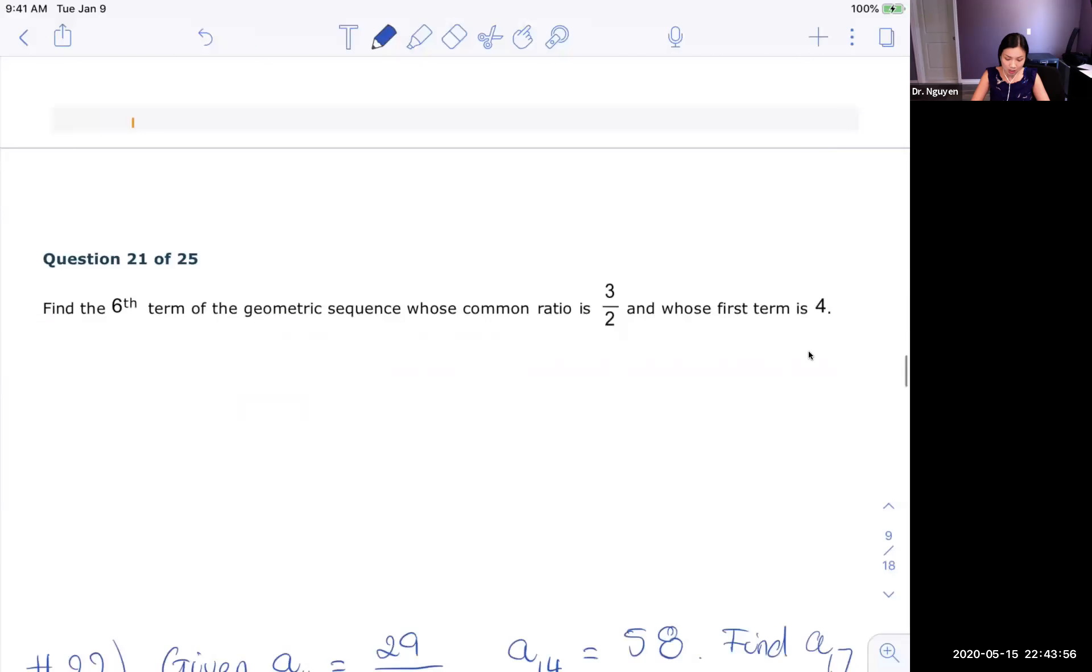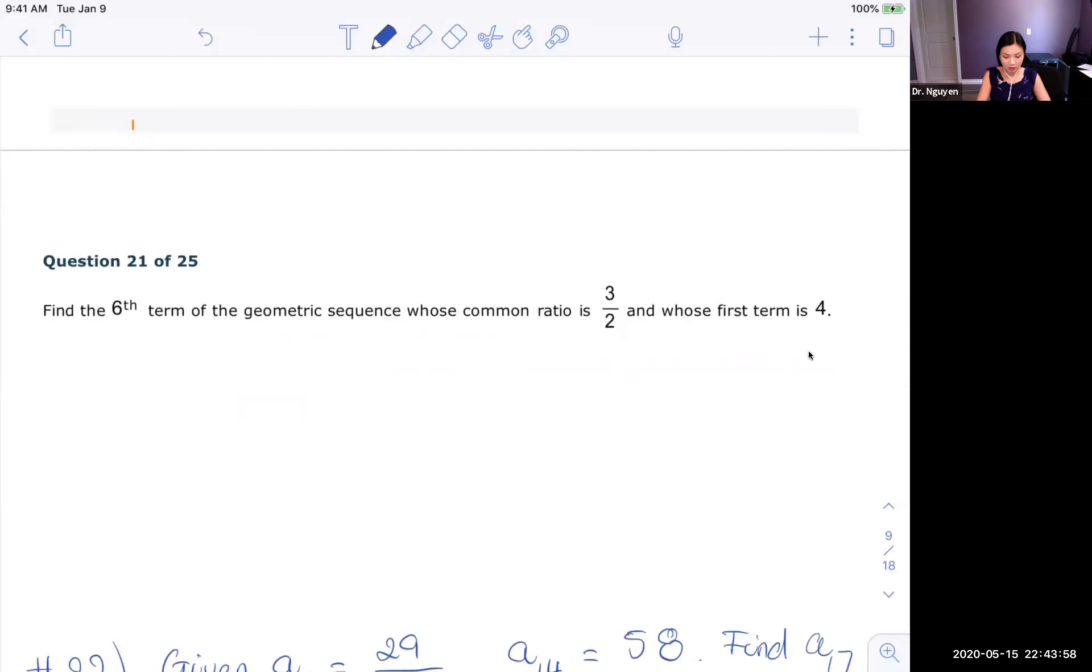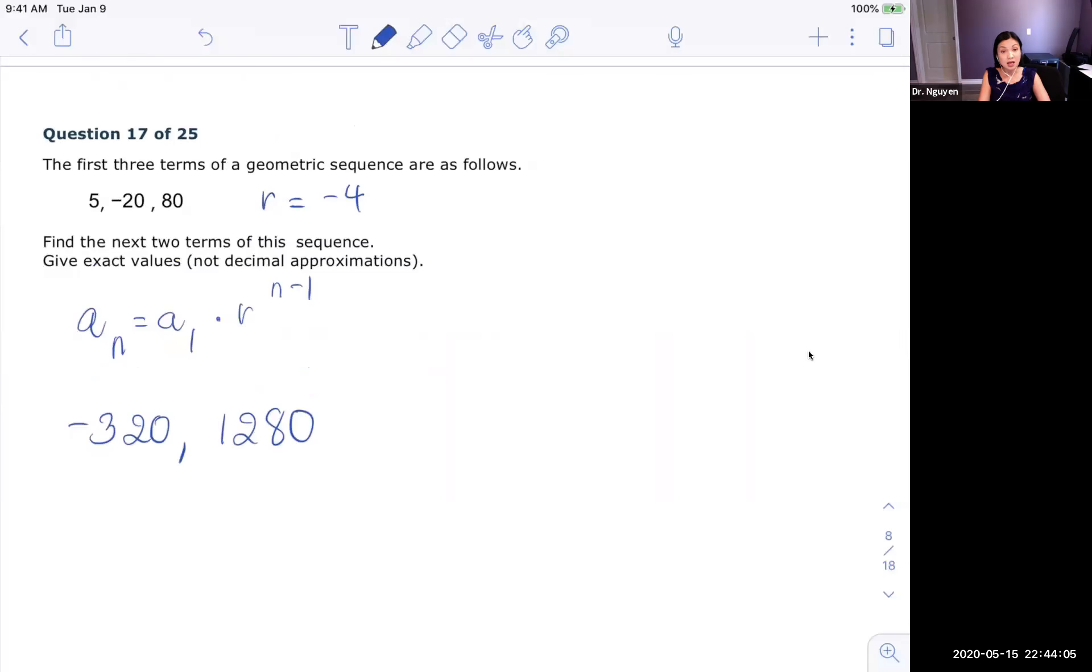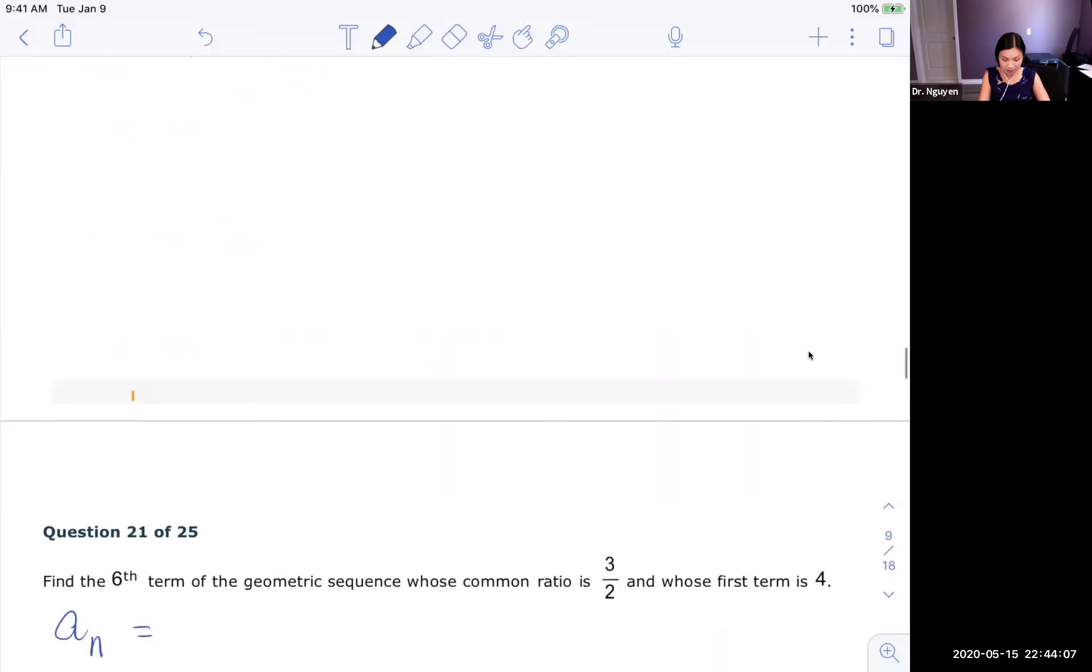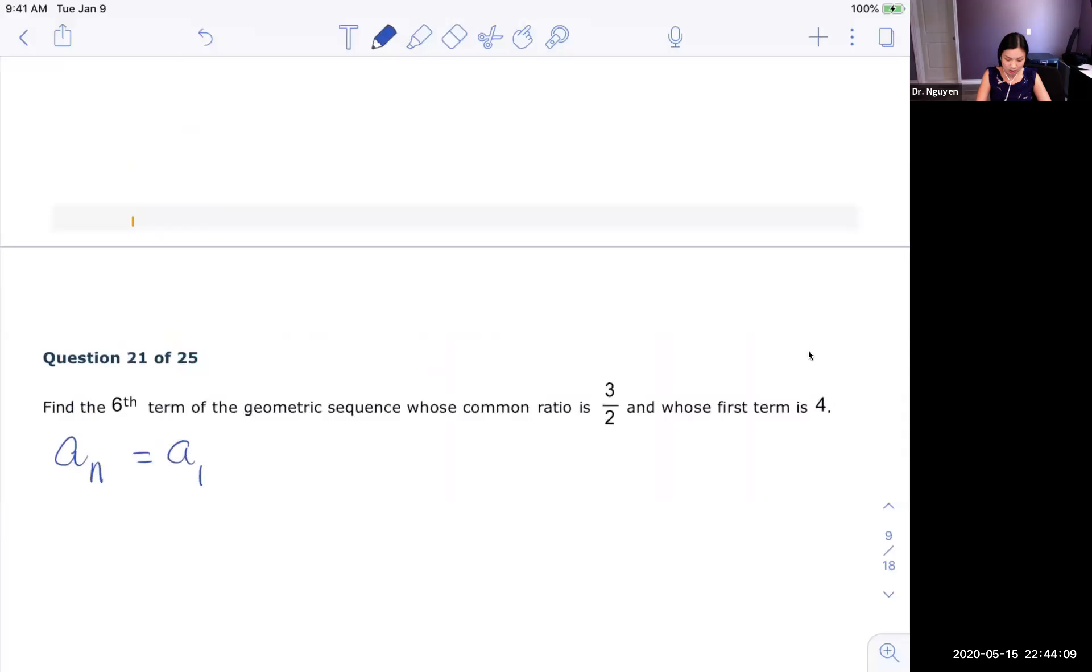So keep in mind the formula that we have. The formula is An = A1 times R to the n minus 1 power, right there. So this is multiplication.